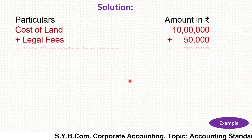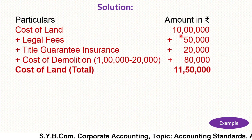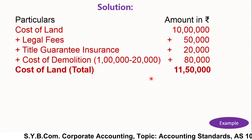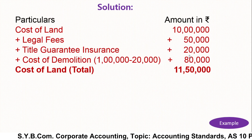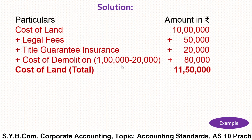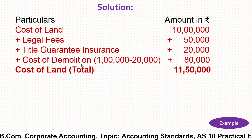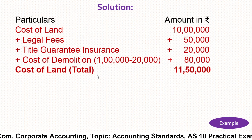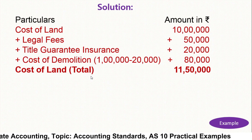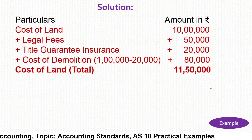Here is the solution. First, we add the cost of land — from the example, that is Rs. 10 lakh. Legal fees paid were Rs. 50,000. Title guarantee insurance was Rs. 20,000. Cost of demolition was Rs. 1 lakh. However, after selling the salvaged material we received Rs. 20,000, so the actual net cost of demolition is Rs. 80,000. In this way, the cost of land is Rs. 11,50,000.